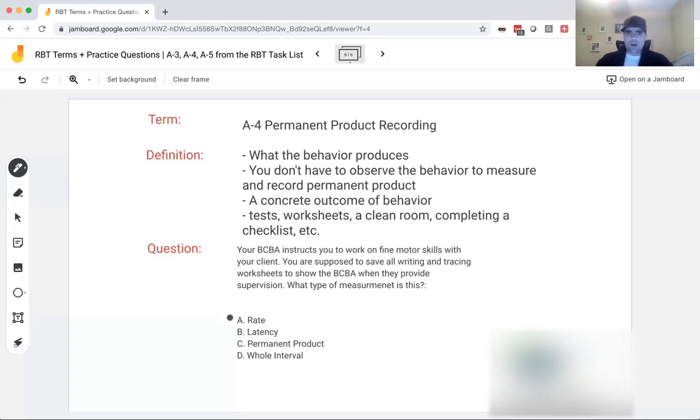So what type of measurement is this? Is this rate? No, there's no frequency involved, no time involved. Latency? No, we're not measuring the time in between an instruction and a response. Permanent product. Yes. What are we measuring? We're measuring the writing and tracing worksheets. The BCBA is not there watching the behavior, but they are measuring the outcome, the product. So permanent product is not more complicated than that. Do not make it more complicated than it has to be.